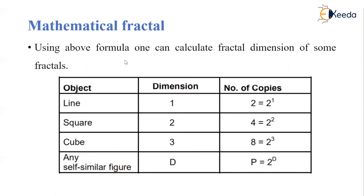Using the fractal dimension formula, we can calculate the dimension of different objects — line, square, cube, or any self-similar figure. The dimension of a line is 1, a square is 2, and a cube is 3. For a line divided into 2 parts, 2 = 2^1; for a square, 4 = 2^2; for a cube, 8 = 2^3. For any general self-similar object with dimension d, we write p = 2^d where d can take any value.